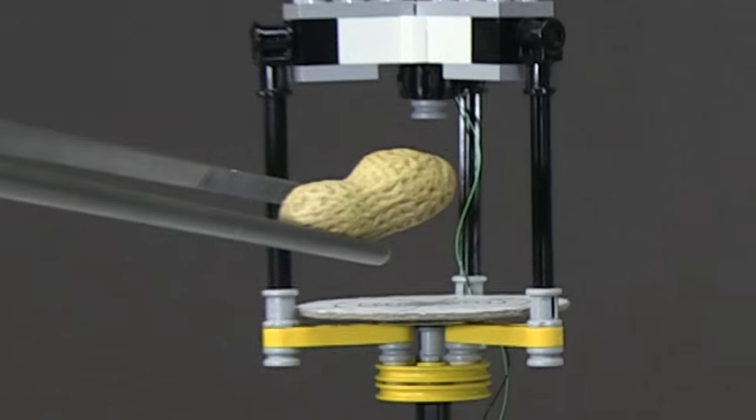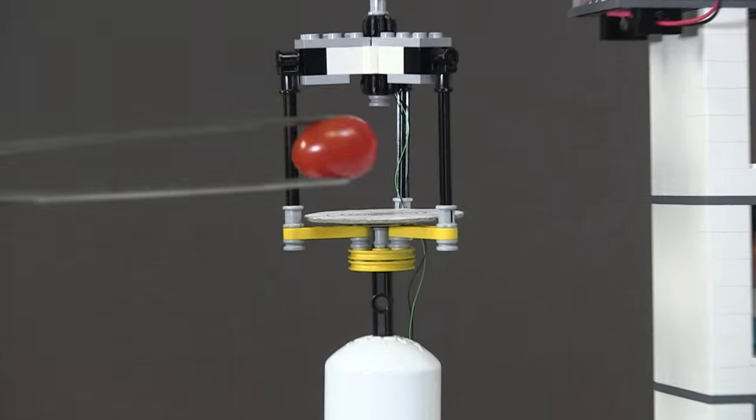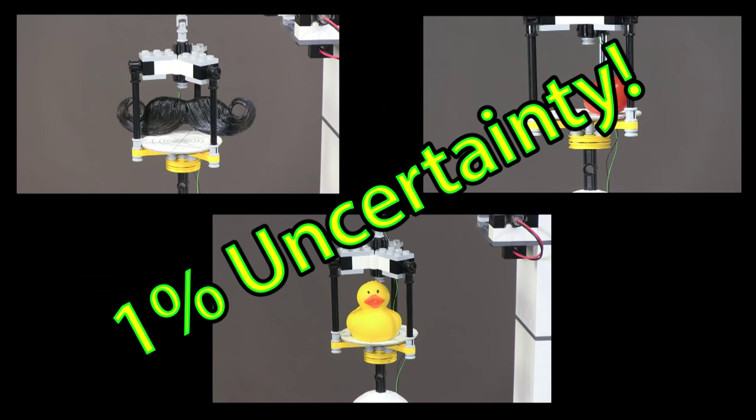Use it to weigh peanuts, packing peanuts, your engagement ring, other LEGO pieces, a button, and much, much more. All with as low as 1% uncertainty.